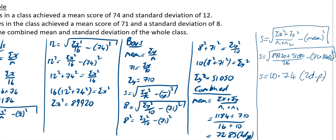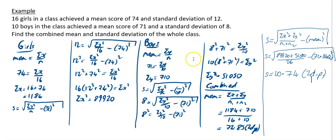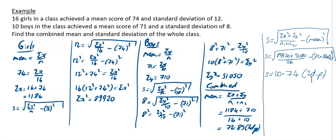It's a good idea to compare the final answers with the original values. The girls' mean was 74, the boys' mean was 71, and our combined mean is 72.85 — that looks sensible. The girls' standard deviation was 12, the boys' was 8, and our combined standard deviation is 10.74. So the answers look very sensible, and that is us done for this video.